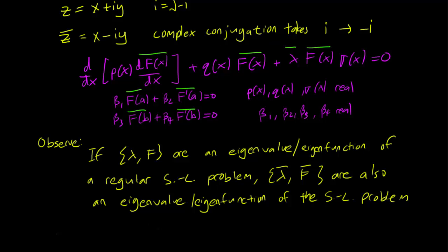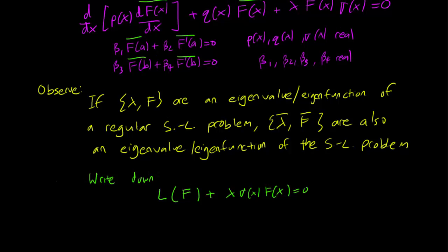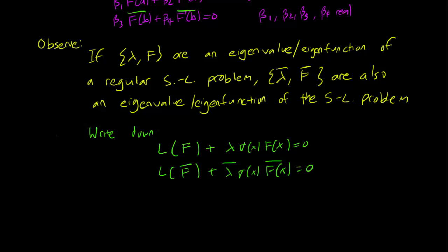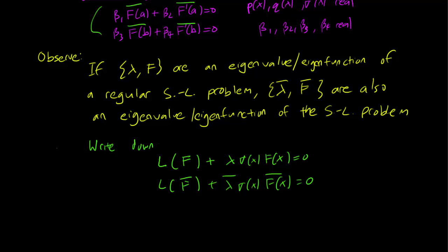So let's think about what happens if we do indeed have a complex eigenvalue. We can write down the Sturm-Liouville equation in the operator form. So L(F) plus lambda sigma(x) F(x) equals 0, and L of f bar plus lambda bar sigma(x) f bar(x) equals 0. And since these are going to be self-adjoint, remember f and f bar obey the same boundary conditions. So L is self-adjoint for these two eigenfunctions.